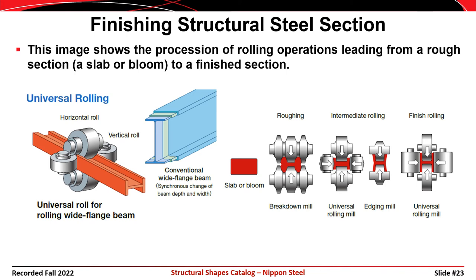The slides to the right of center show this process. You start off with a slab or a bloom, it goes into a roughing operation where it's a rough H shape, and then finally it comes out looking like an I-beam or H-beam.